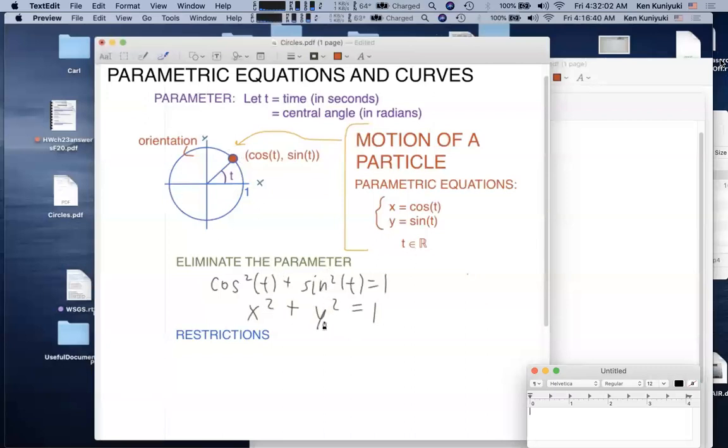However, we lose something as we eliminate the parameter. What do we lose? We lose our sense of direction. We lose our sense of orientation. So there is a price that we pay when we eliminate the parameter, although we do recognize the equation of the unit circle here. It makes it easier to graph.